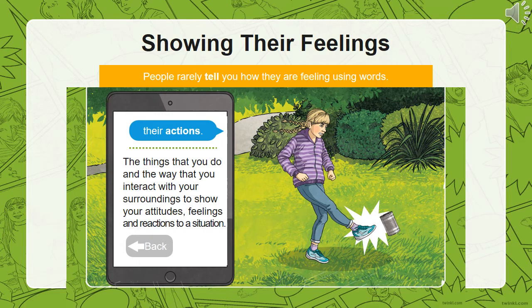Finally, we have our actions. These are the things that you do and the way that you interact with your surroundings to show your attitude, feeling, and reactions to a situation. Here we can see the girl's actions are showing that she is angry, as she is kicking the metal tin.